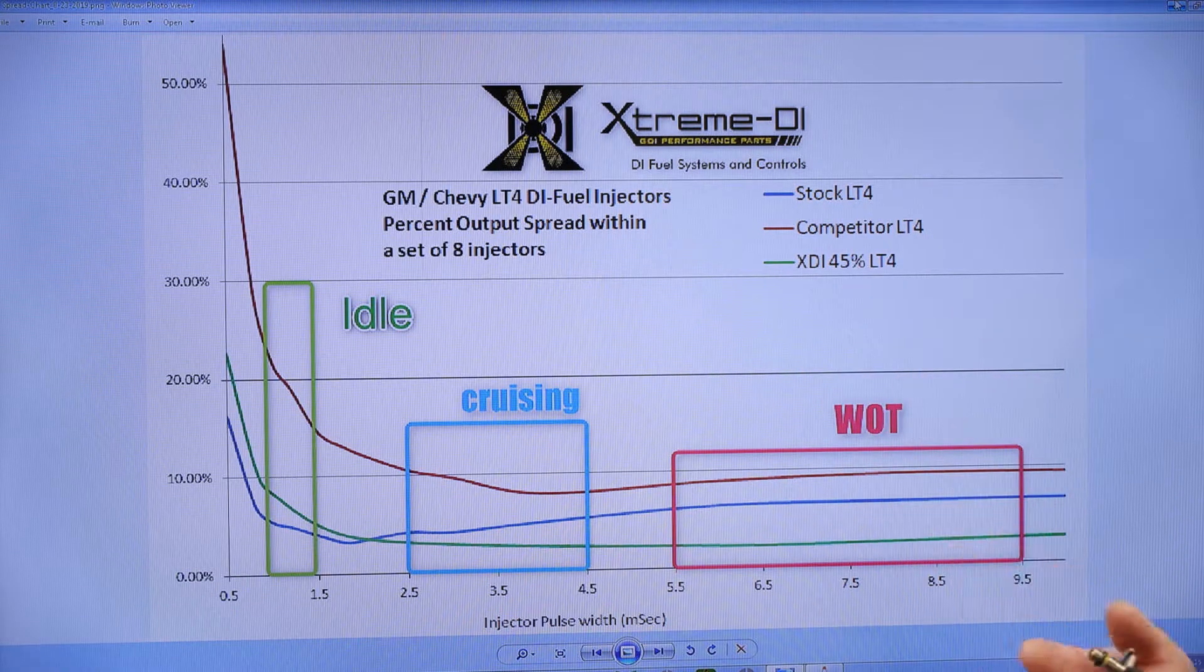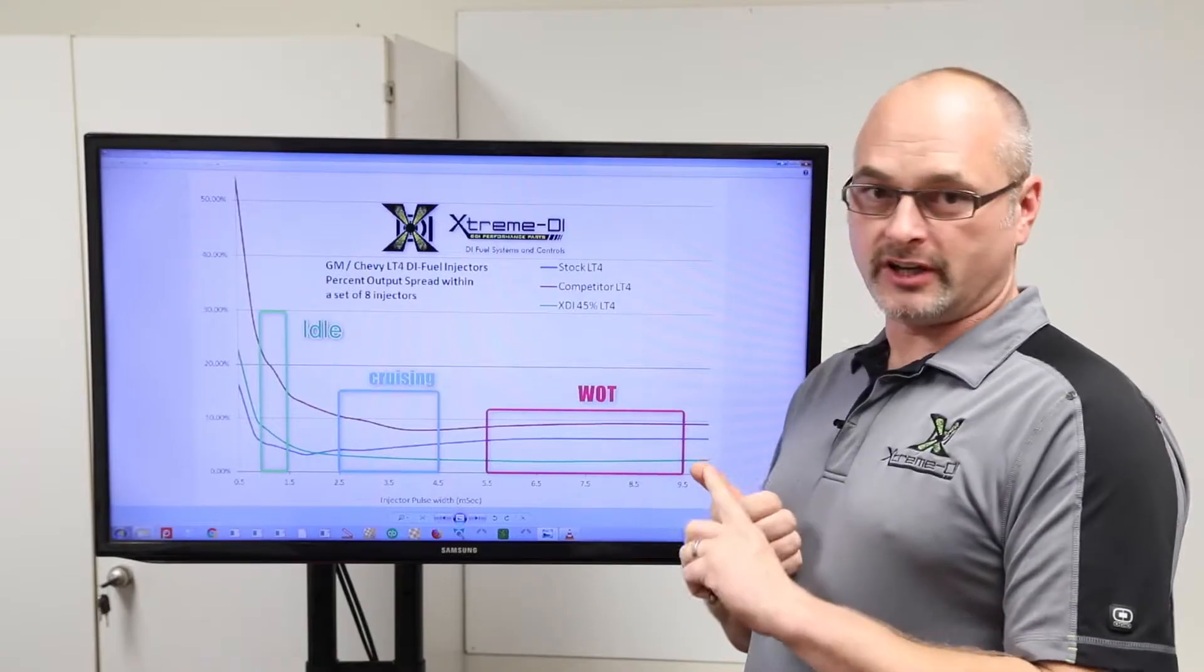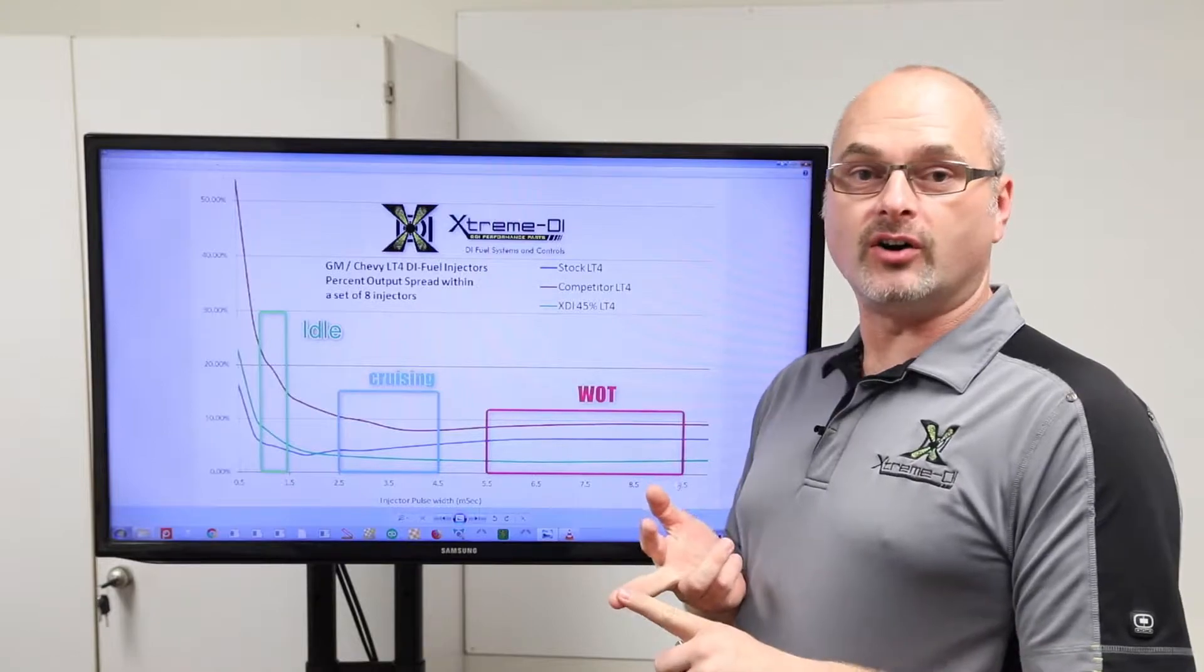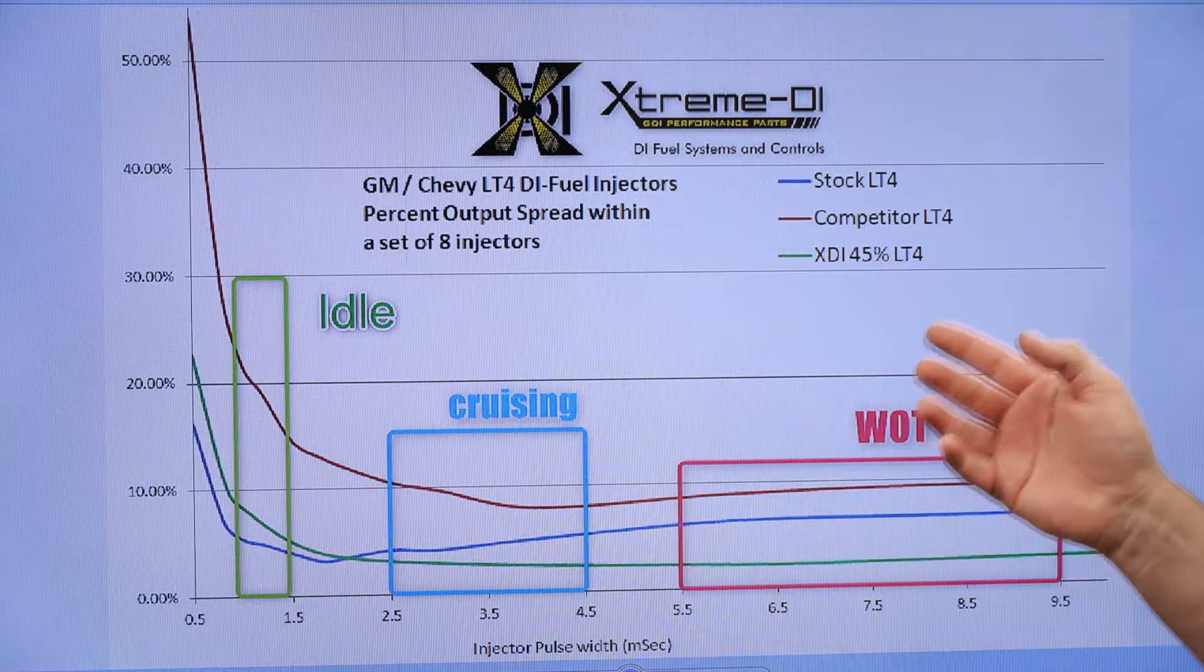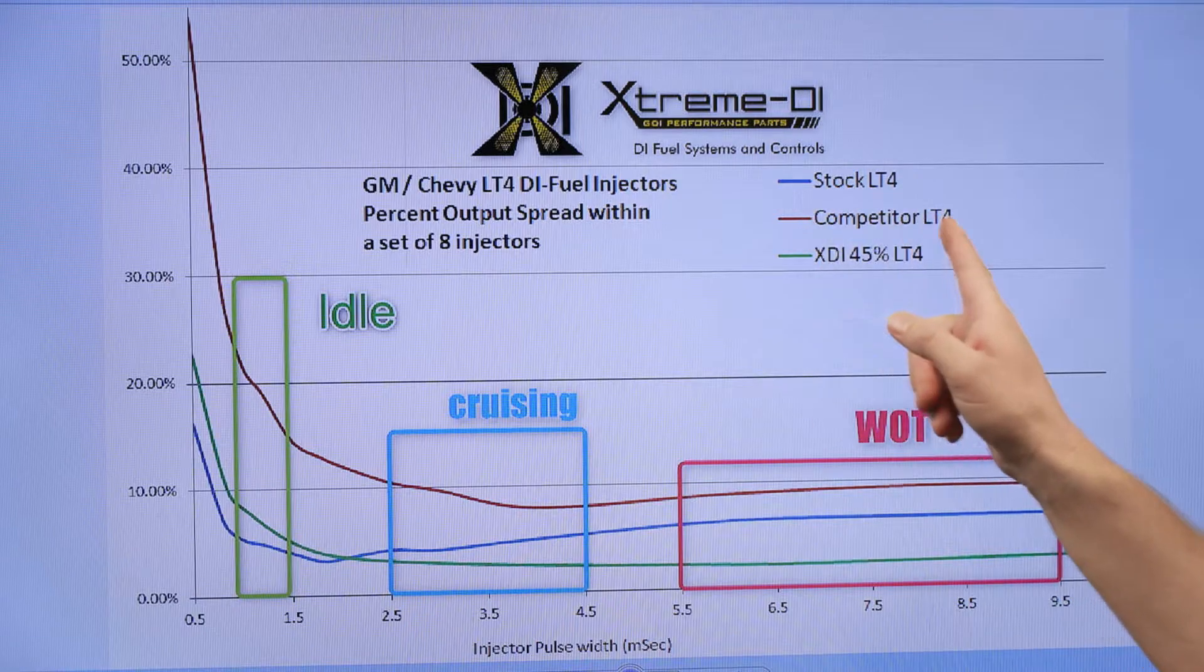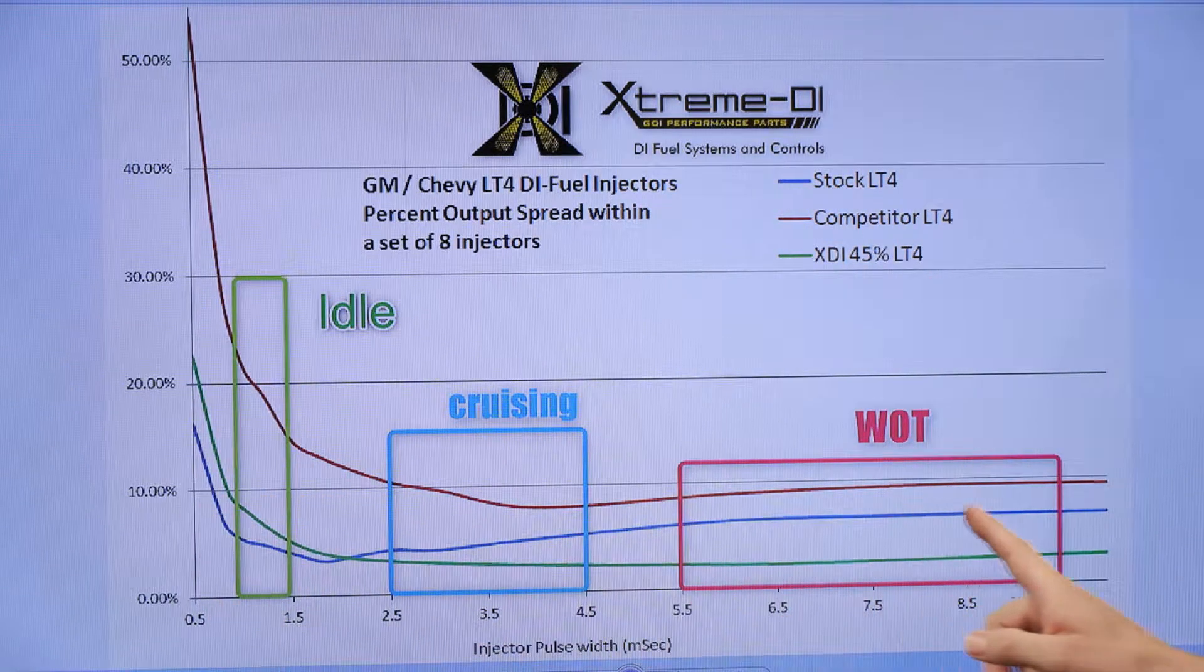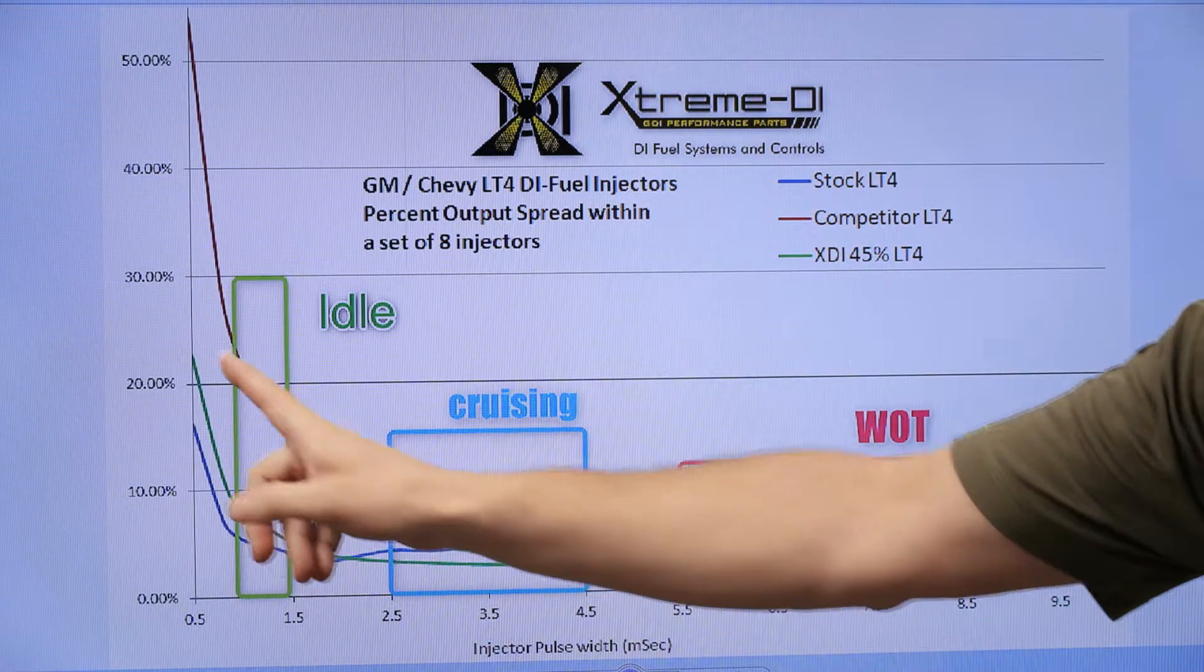To get to this chart, what we did is we took three sets of these LT4 injectors: a factory set the way you can buy it at every dealership, a competitor set of eight injectors, and one of our brand new XDI 45% over LT4 injectors. These sets are represented by different curves and different colors. The competitor set is the red one, the factory one is the blue, and the XDI 45 set is the green set.